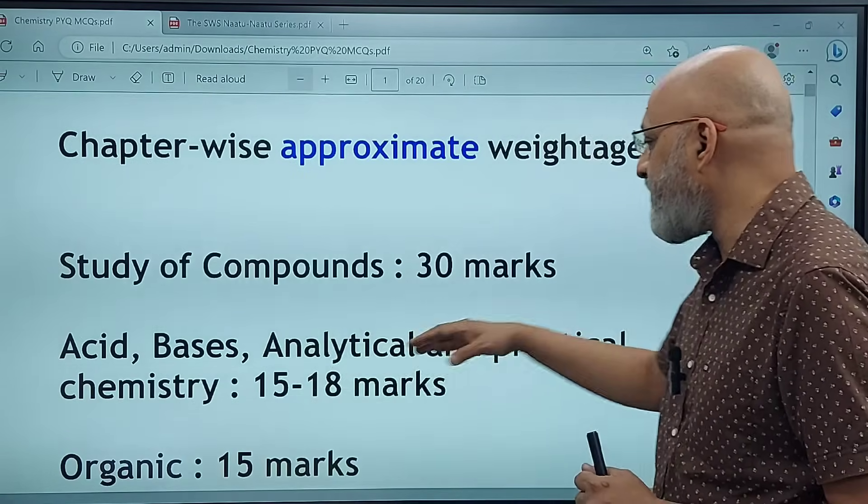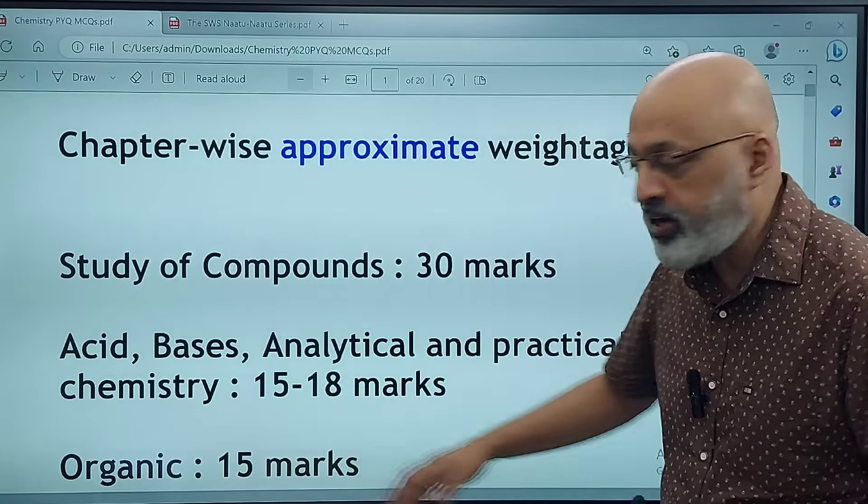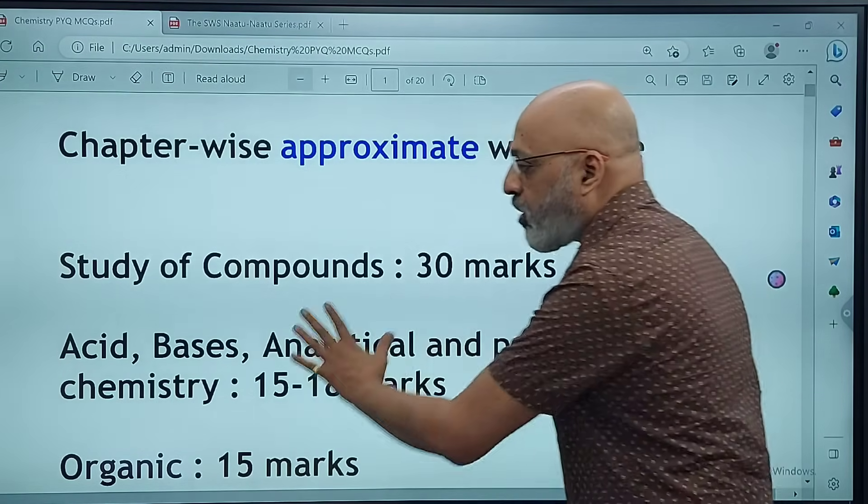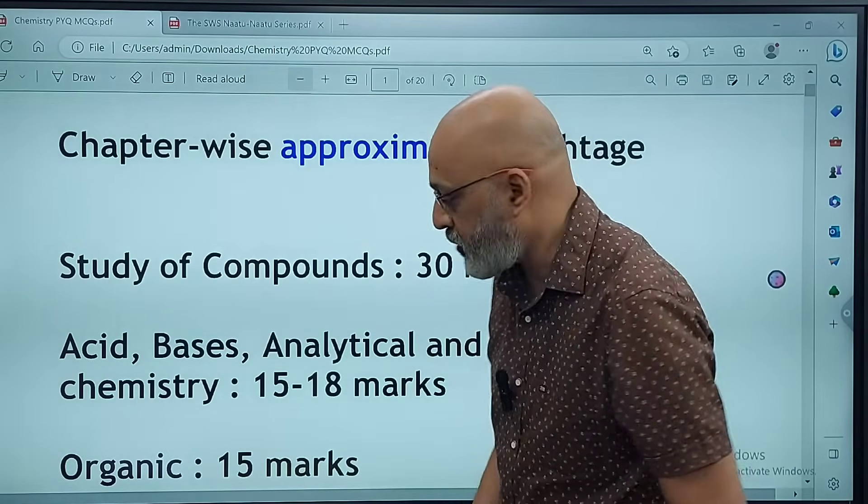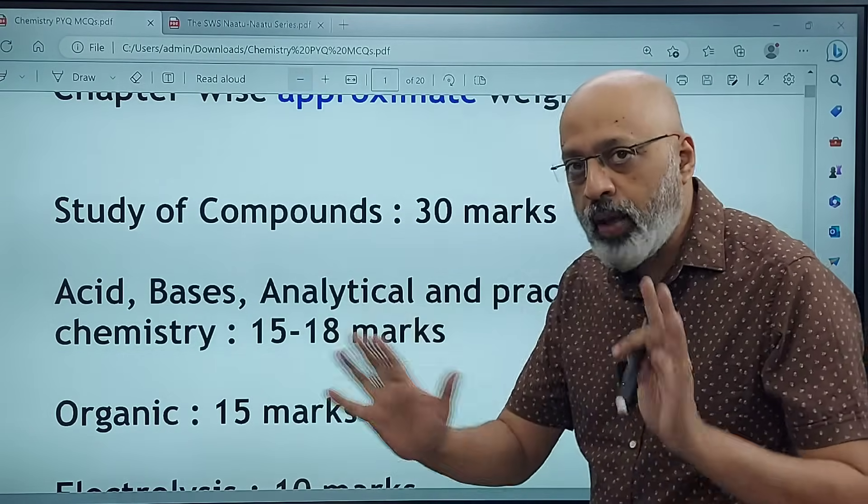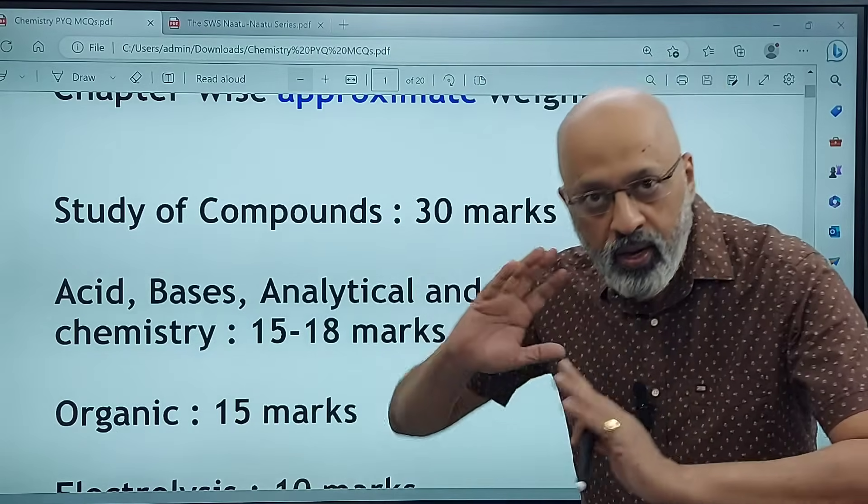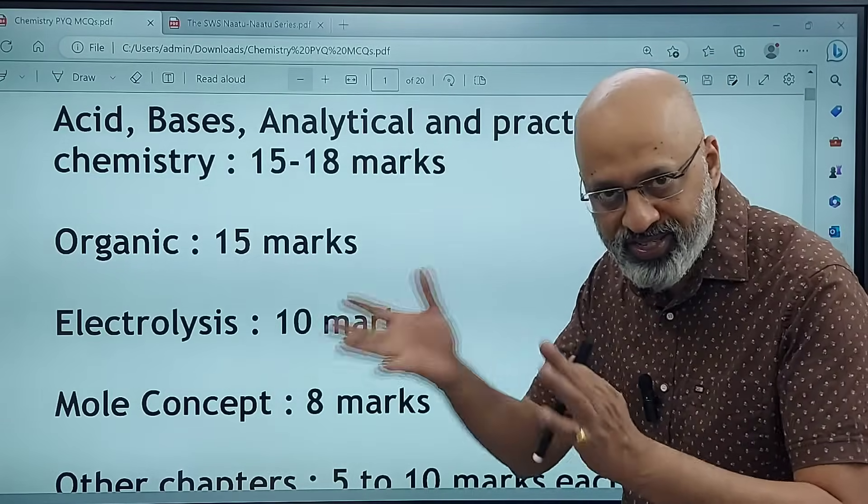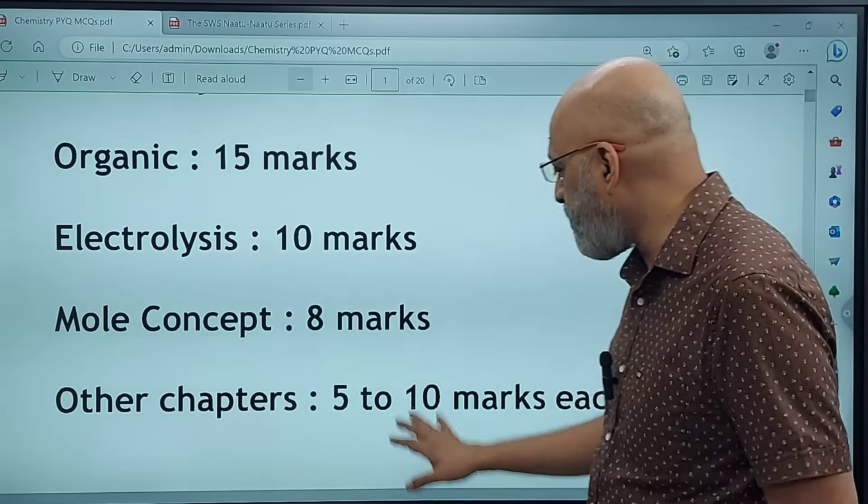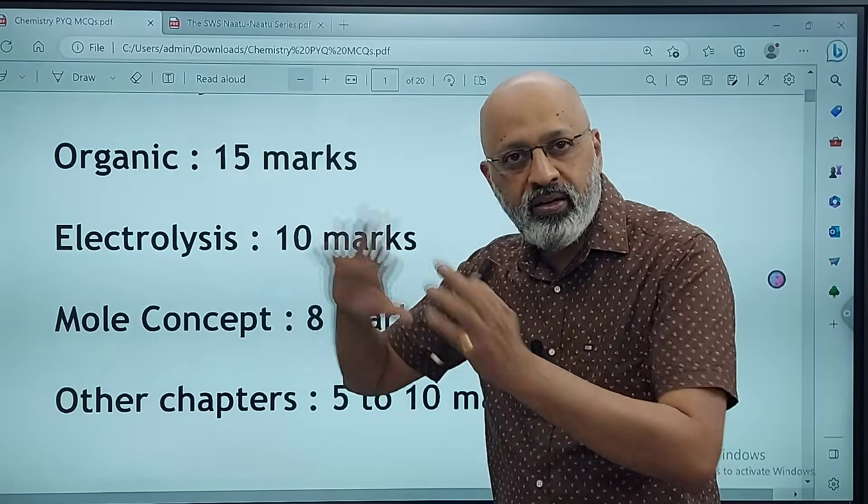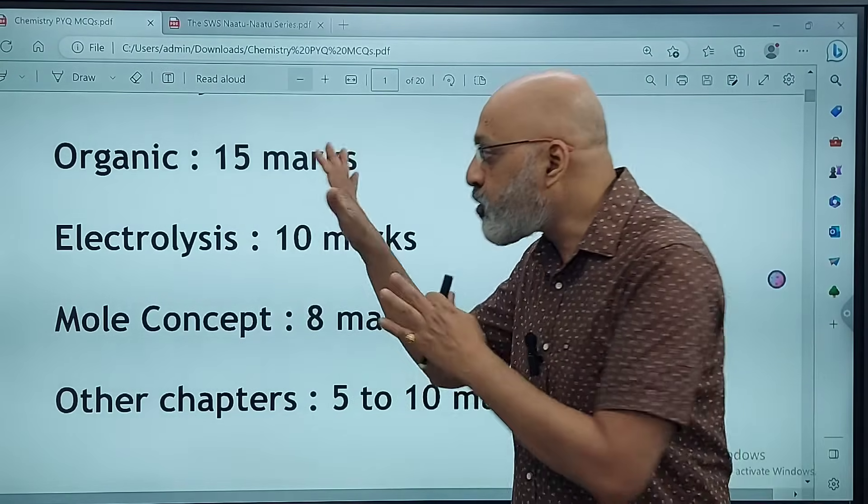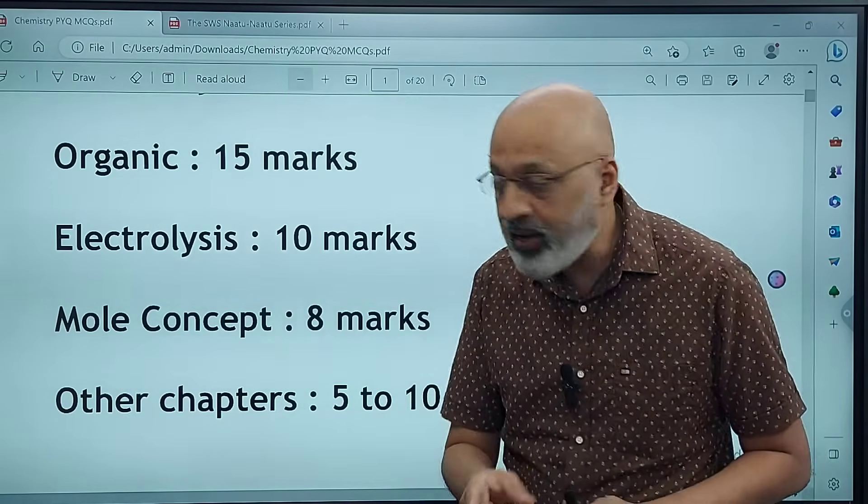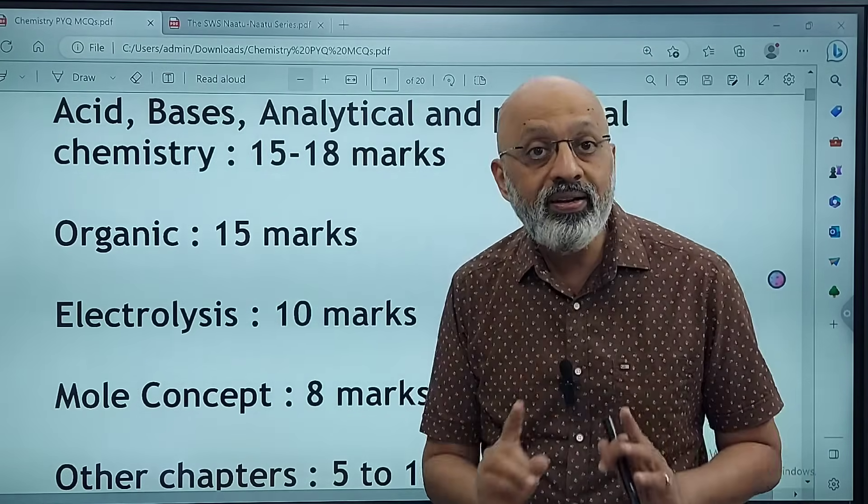Next is acid, bases, analytical and practical chemistry. This comes for approximately 15 to 18 marks, making it the second most important chunk. Organic chemistry: 15 marks. Electrolysis: approximately 10 marks. Mole concept: 8 marks. Other chapters like metallurgy: between 5 to 10 marks each.